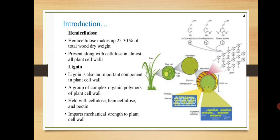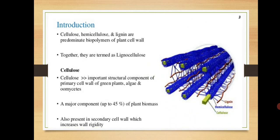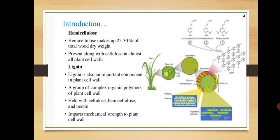Now, what about hemicellulose and lignin? Hemicellulose is a component of the plant cell wall. When we say lignocellulose, it is not just a single word — it is a combination of cellulose, hemicellulose, and lignin. Hemicellulose contributes about 25 to 30% of the total wood dry weight. It is present along with the cellulose in almost all plant cell walls. Lignin is also an important component of the plant cell wall — it is a group of complex organic polymers held along with cellulose, hemicellulose, and pectin.